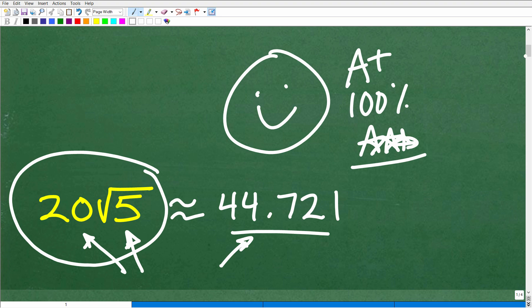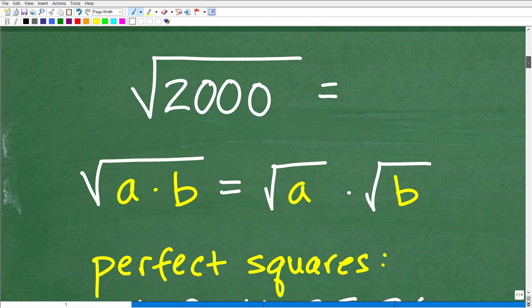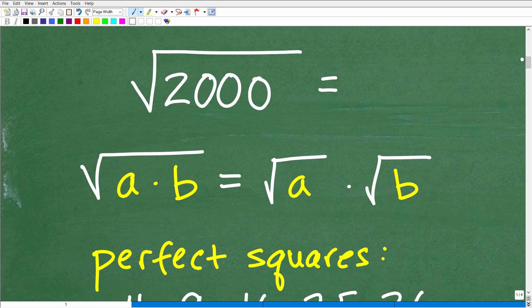Okay, so let's go ahead and get into this problem right now. So here it is, the square root of 2,000. So what do we need to figure this out? Well, what we're going to need is we're going to have to have, actually, an understanding of a property of square roots.